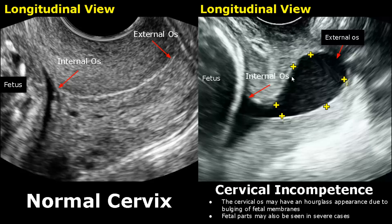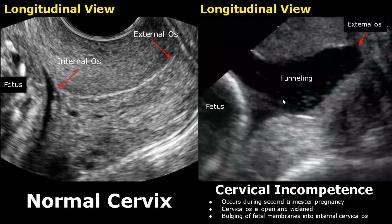It looks like this. In severe cases, fetal parts or even the umbilical cord may also be found in the cervix. Here is another image of cervical incompetence — this is the dilated cervix and this is funneling.